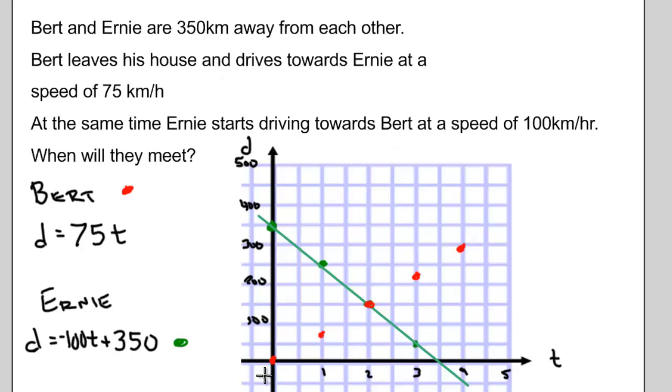Again, we can connect those dots to make a straight line. Notice where the graphs cross. What does that mean? What does it mean when the two graphs cross?